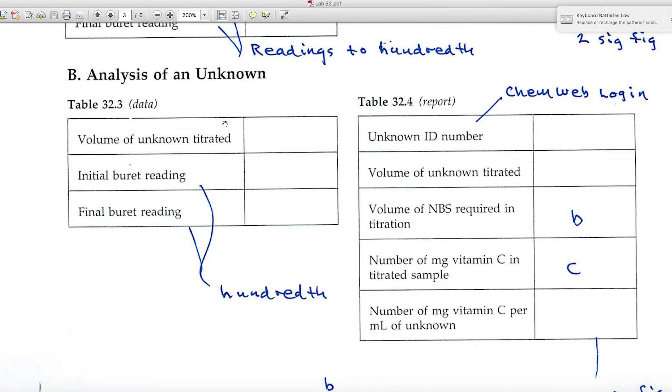In Part B where you're analyzing an unknown, again the volume of unknown titrated is 10.00 milliliters. Burette readings you'll want to record to the hundredth. Over here in table 32.4, the unknown ID number: remember that you get that when you log in to ChemWeb. It's a four digit number that's specific for you, and enter it there.